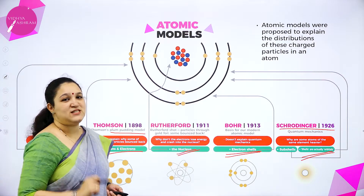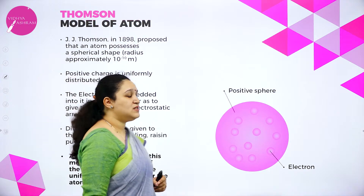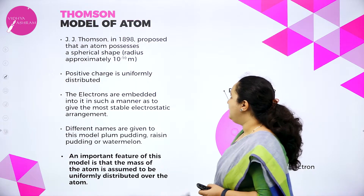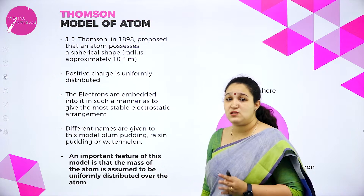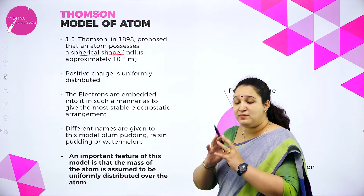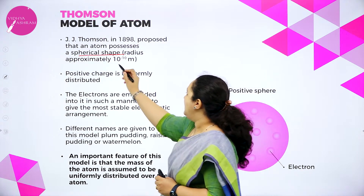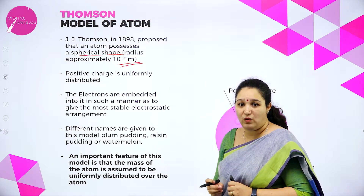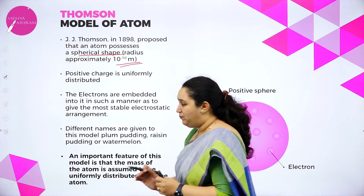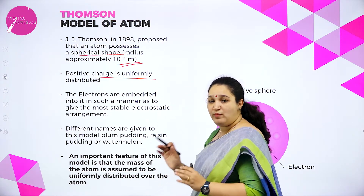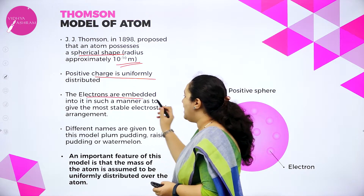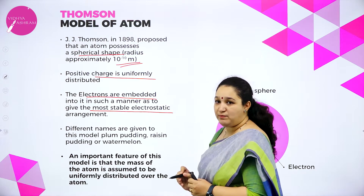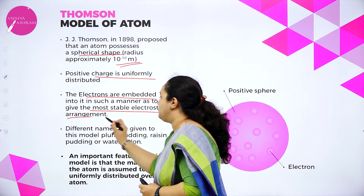We will go for the first atomic model — Thomson's model of atom. J.J. Thomson in 1898 proposed that an atom possesses a spherical shape with a radius of 10⁻¹⁰ meters — a very, very small radius. The positive charges are uniformly distributed and the electrons are embedded into it such that they give the most stable electrostatic arrangement.